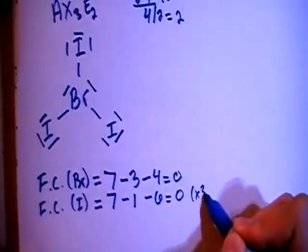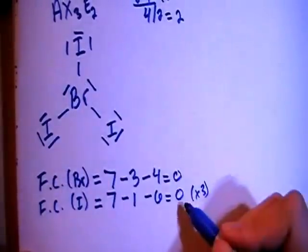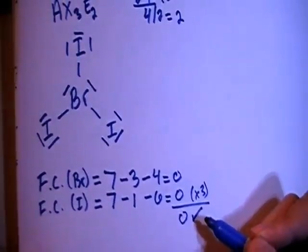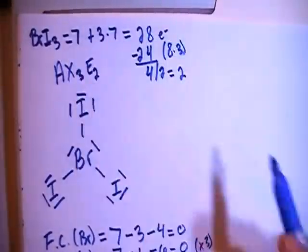And multiply that times 3, because there are 3 of them. And add all these up, it gives us a formal charge overall of 0, which is what we want, because this is not a charged particle.